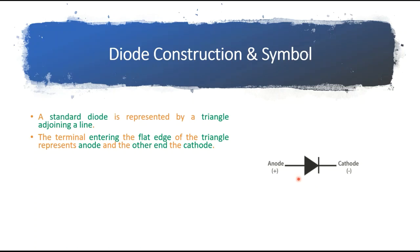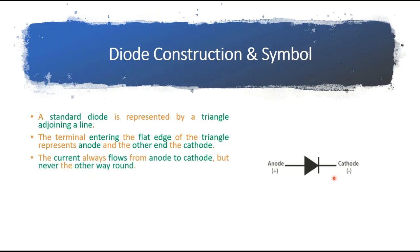The terminal entering the flat edge of the triangle represents the anode, which is the positive terminal, and the other end is called the cathode, which is the negative terminal. Current always flows from the positive to the negative — that is, from anode to the cathode side. The reverse direction is not possible; current always flows from anode to cathode.